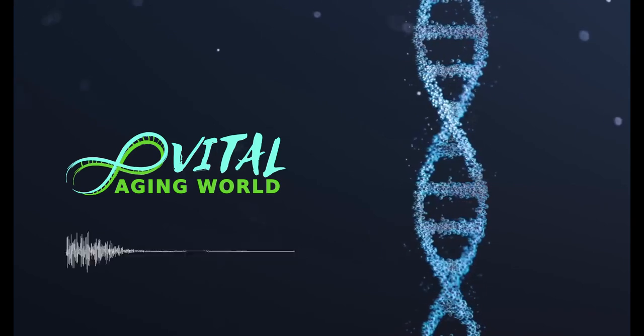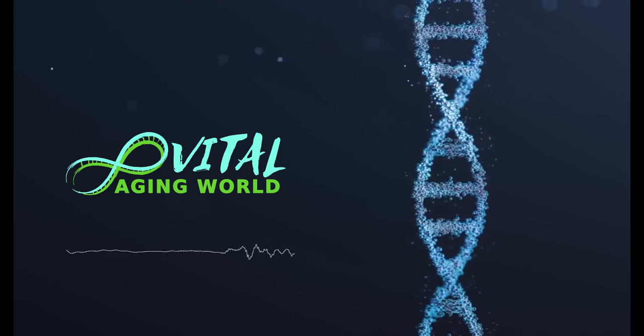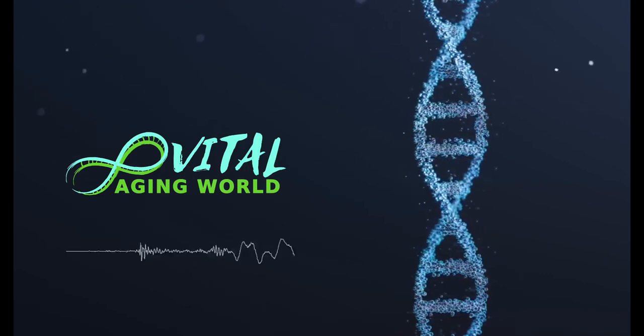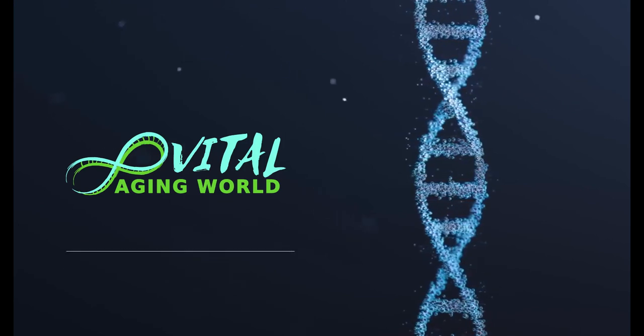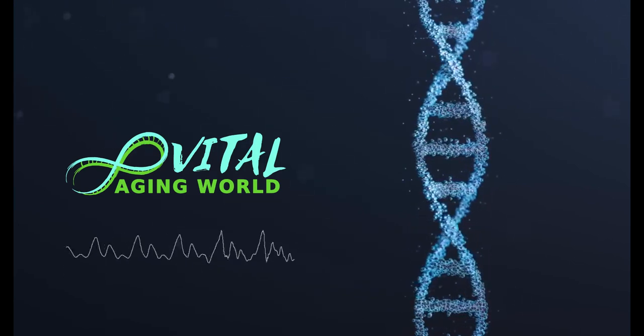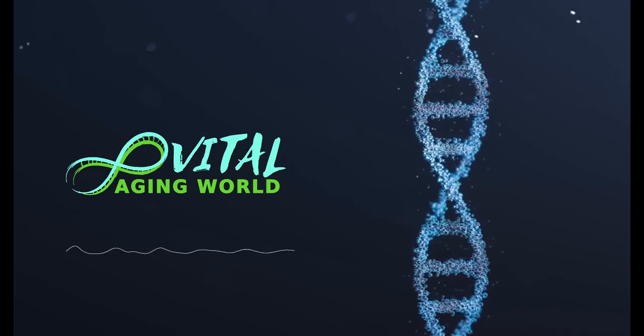But when glycogen stores are already full and more carbohydrates are consumed, they are instead converted into fat and stored in the body as fatty tissue. Excessive carbohydrate intake, especially simple carbohydrates like sugar, causes blood sugar levels to spike. This leads to the release of insulin to remove excess glucose from the blood.